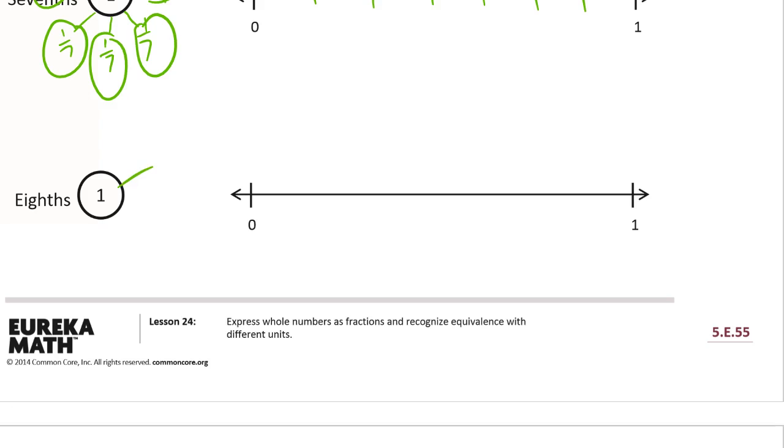For eighths I need one, two, three, four, five, six, seven, eight parts for my number bond. Eight eighths for my number bond.